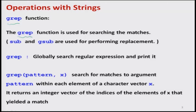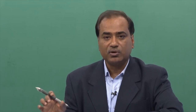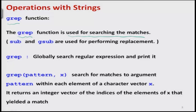The objective of the grep function is very simple — it is used for searching matches. Searching the matches means: I have an expression and I want to see where it is occurring in the file or given data set. This will only find and say these are the places where the match is occurring. The meaning of grep is 'globally search regular expression and print it.' So it will search and also print the outcome — that is the simple use of this grep function.